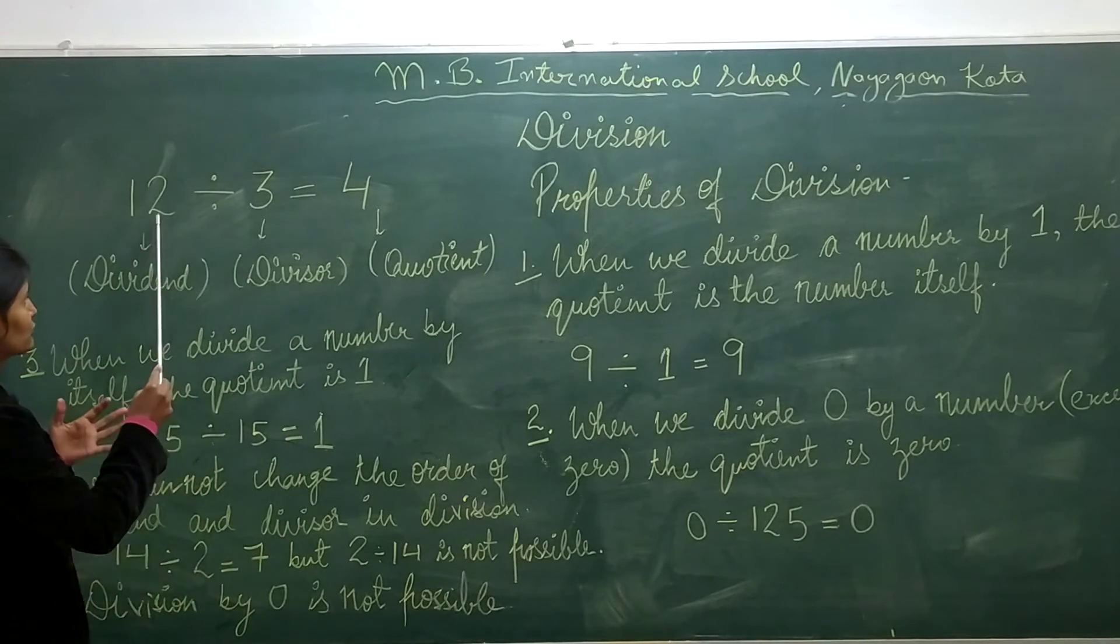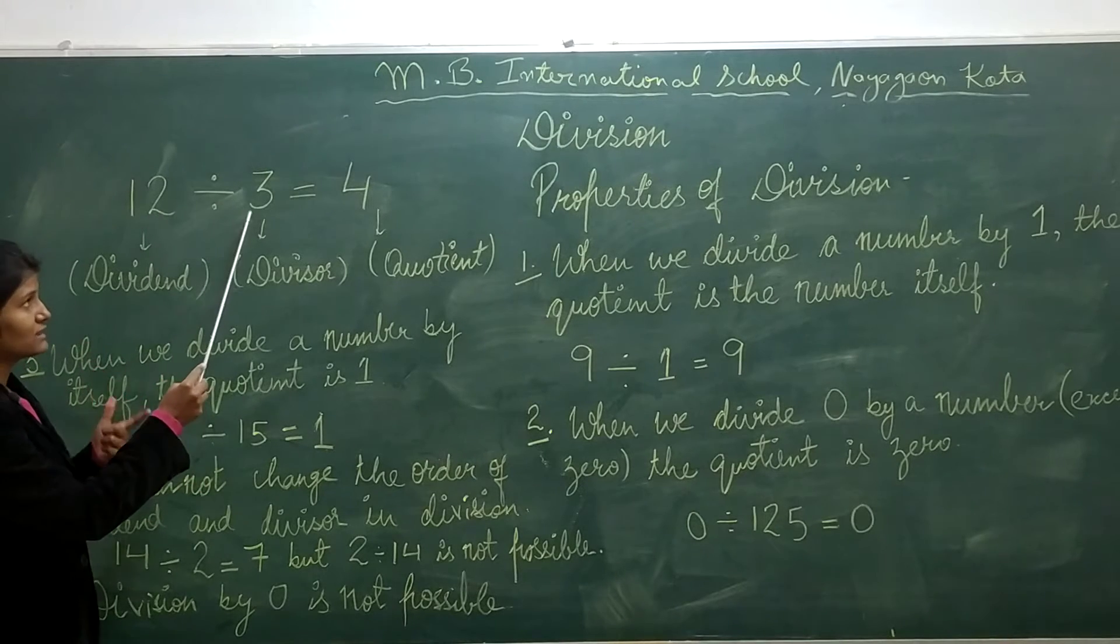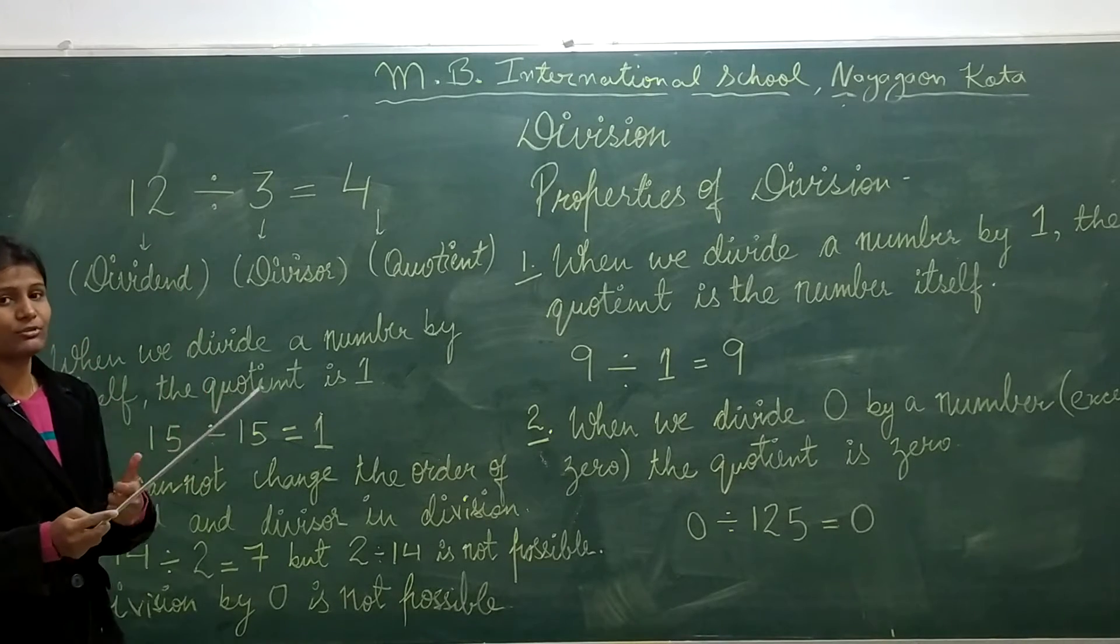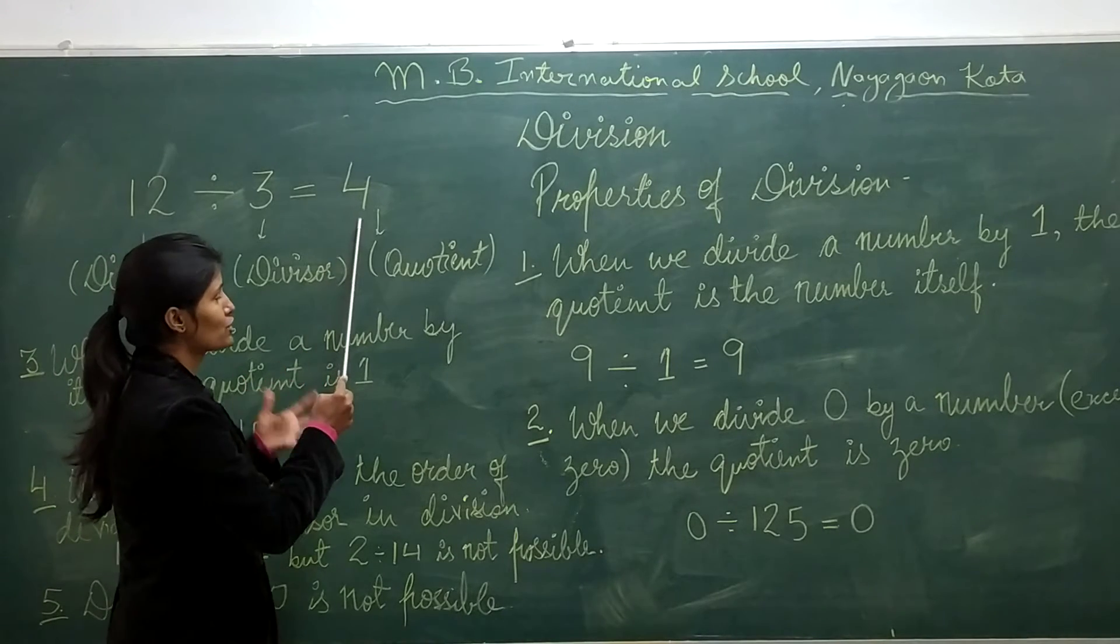For example, if we have 12 toffees and we have to distribute them equally among 3 children, how many toffees does each child get? Each child gets 4 toffees.